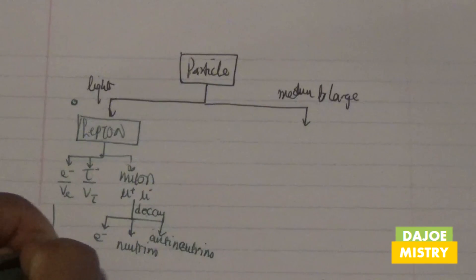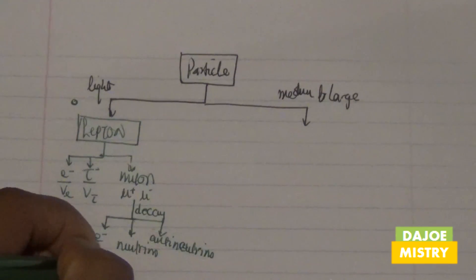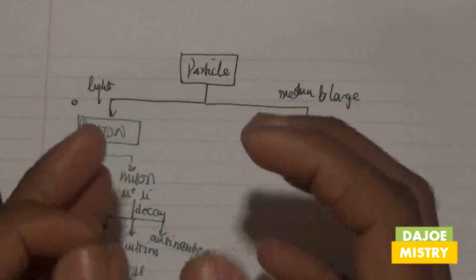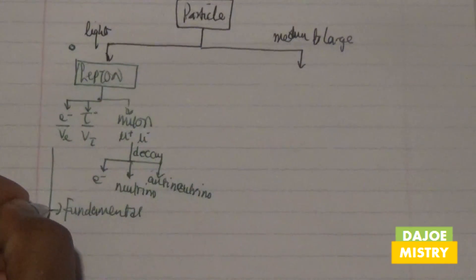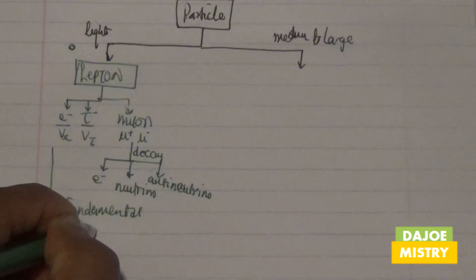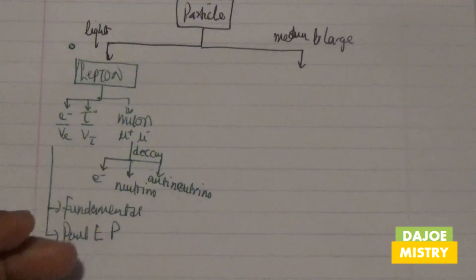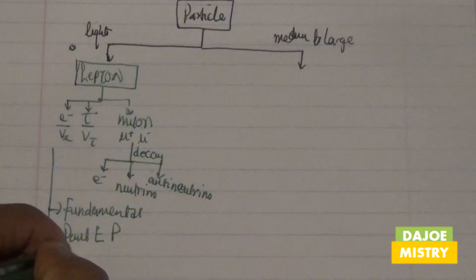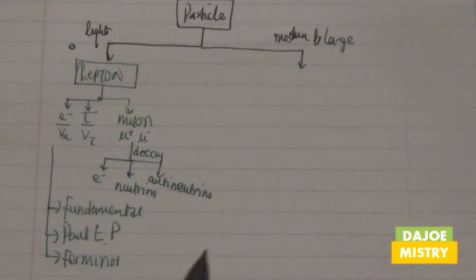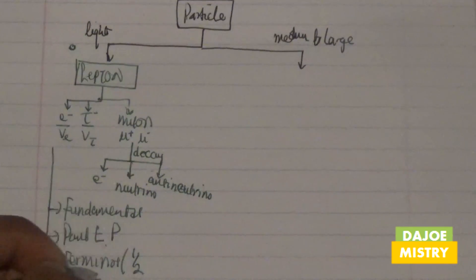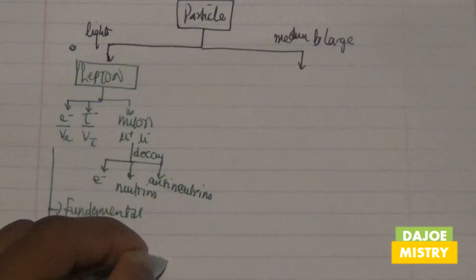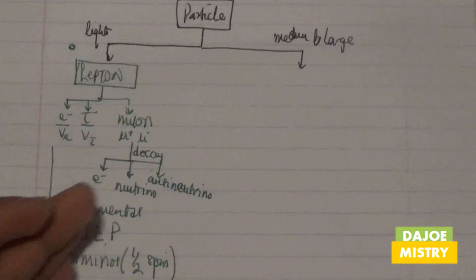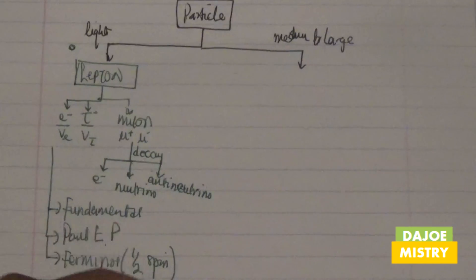Once they are fundamental, it means they can't be broken down further or don't consist of other things inside them. These fundamental particles are also known to obey the Pauli exclusion principle. Once you obey the Pauli exclusion principle, you're categorized as fermions. Being a fermion means you have a half-integer spin, and fermions mostly obey the Pauli exclusion principle.